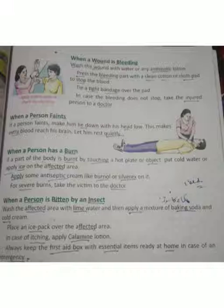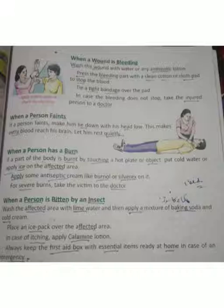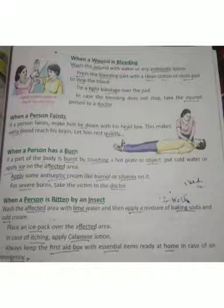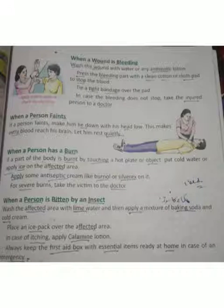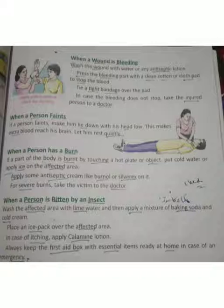آخری موضوع: when a person is bitten by an insect۔ اگر کسی انسان کو کوئی کیڑا کاٹے یا ڈنک مارے تو کیا کریں؟ Wash the affected area with lime water, and then apply a mixture of baking soda and cold cream۔ جہاں ڈنک ماری ہو وہاں لیموں کے پانی سے صاف کریں، پھر baking soda اور cold cream کا mixture لگائیں۔ Baking soda ایک chemical ہے جسے کھانے کا سوڈا بھی کہتے ہیں۔